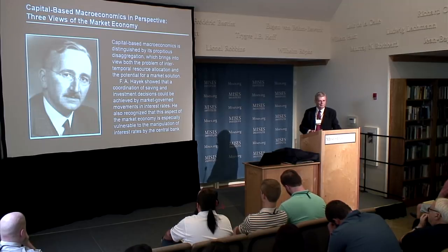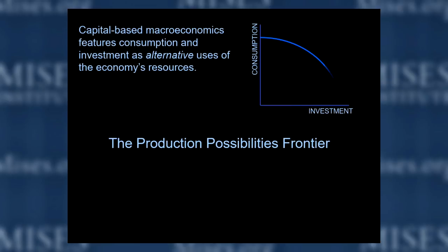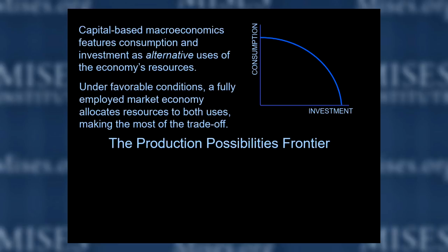So a lot of my early slides will show the savings part, and then we'll go to the printing part. Here's a production possibilities frontier — a standard thing. Consumption is on the vertical axis, investment on the horizontal. Under favorable conditions — meaning let the market work and keep the central bank out of the picture — a fully employed market economy allocates resources to both uses, making the most of the trade-off.